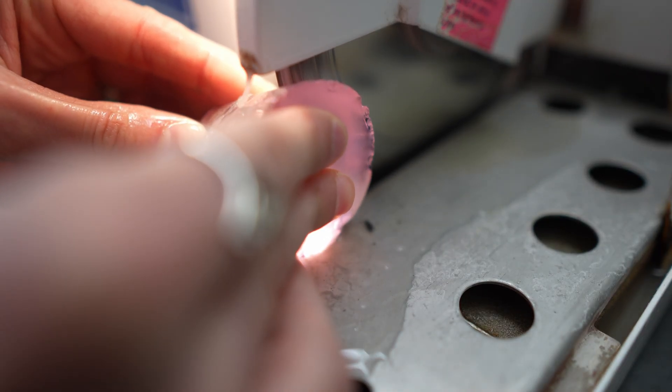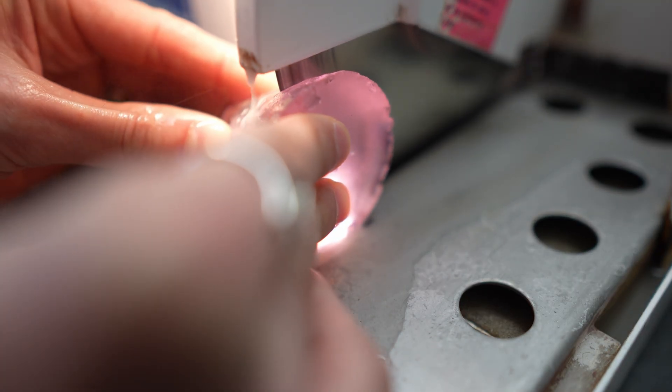So this fancy little machine that I'm working with is called a trim saw. I'm going to use it to cut our ND YAG, aka laser garnet, into a little bit more workable size.